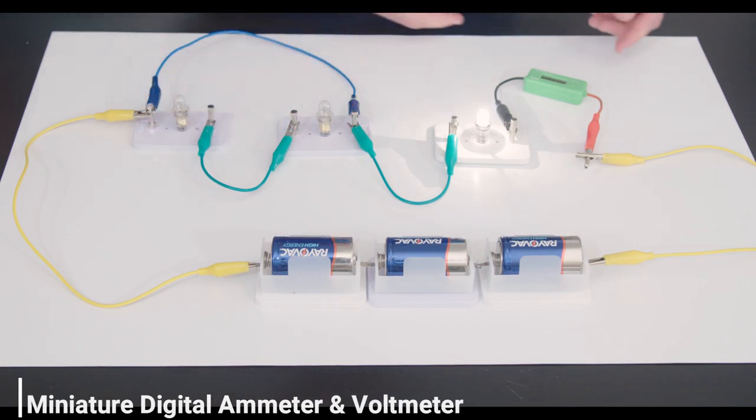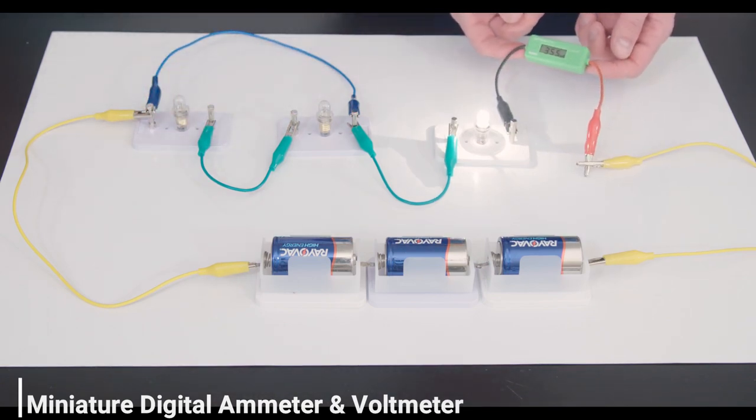For just one light bulb, it is 355 milliamps, which is more still.